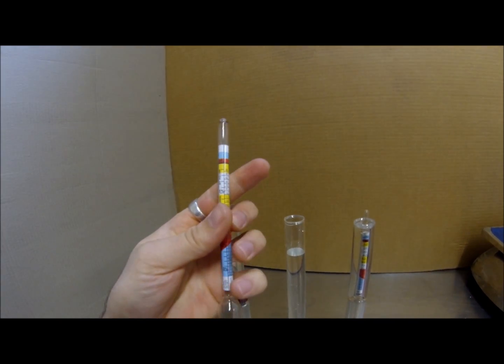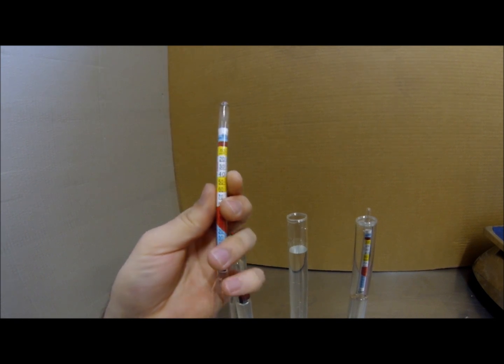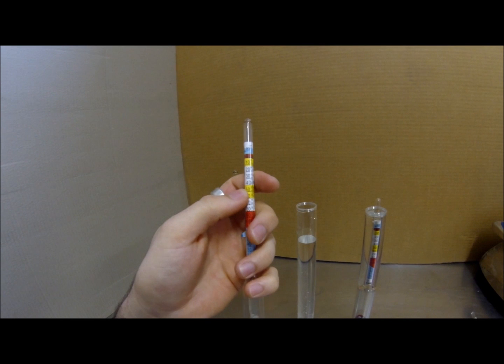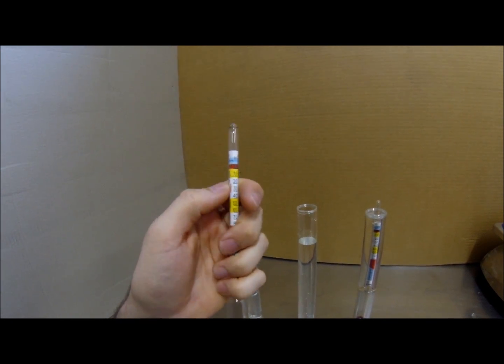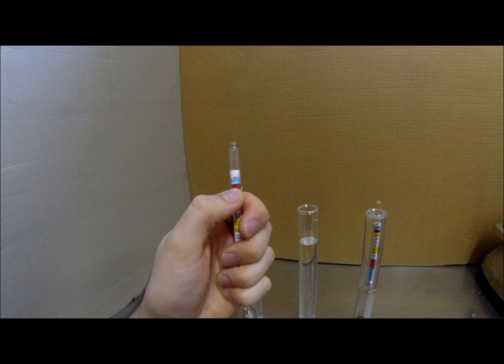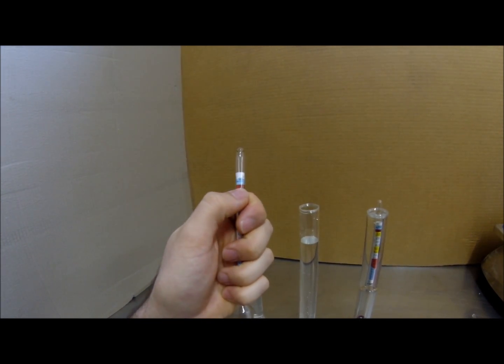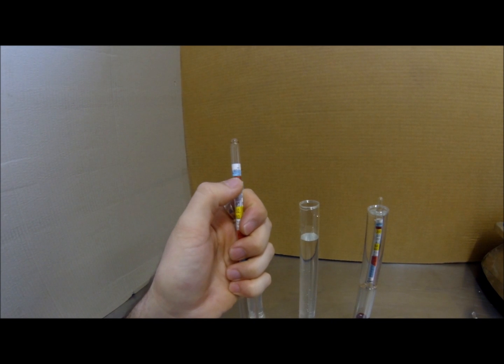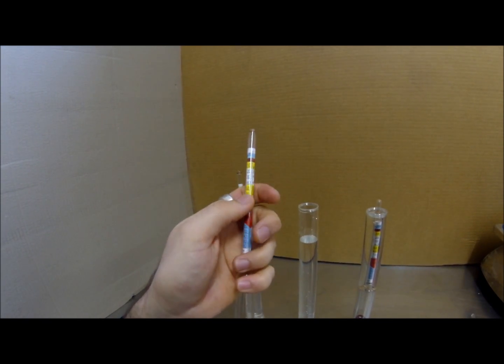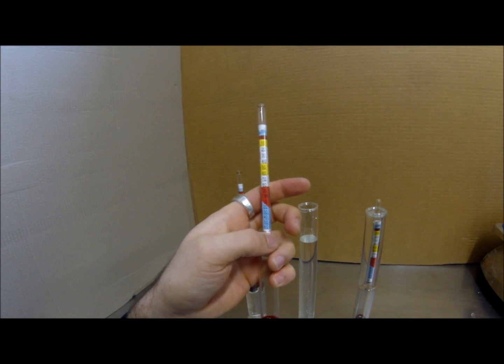I know on the hydrometer it has a whole lot of scales and stripes and numbers and it can be quite daunting and confusing. So the first thing I want you to do is find the scale that has 1.000, three zeros. That's the scale you'll always use when measuring and using your hydrometer.